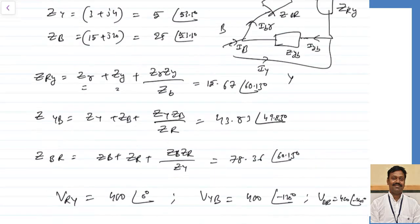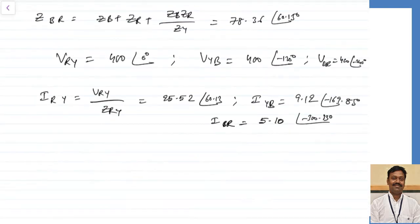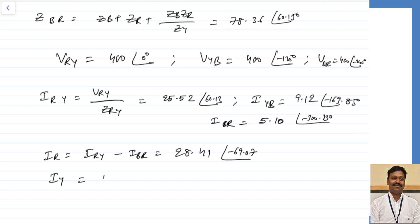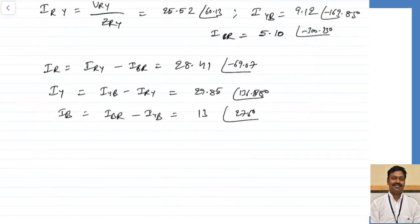Once the delta phase currents are obtained, the line currents are: IR = IRY − IBR = 28.41∠−69.07°, IY = IYB − IRY = 29.85∠136.58°, IB = IBR − IYB = 13∠27.6°. Since in star connection the line current equals the phase current, these same currents pass through the star impedances.